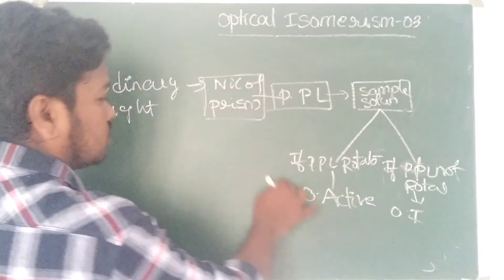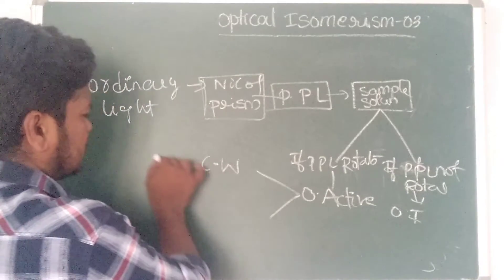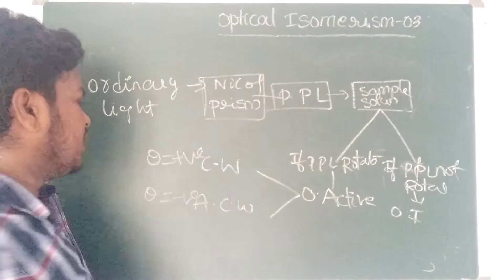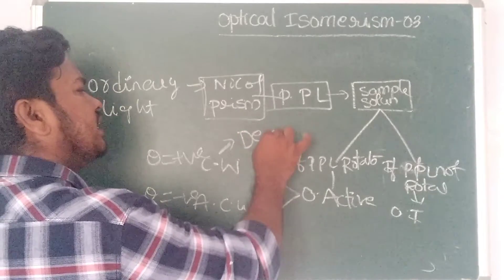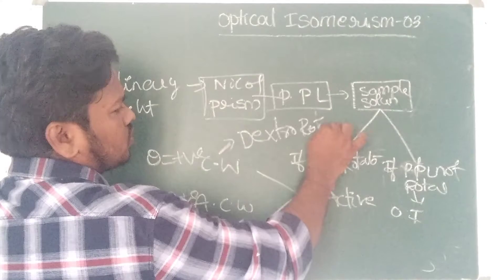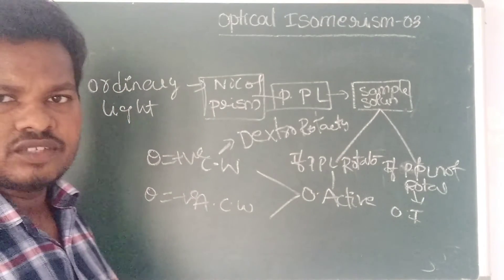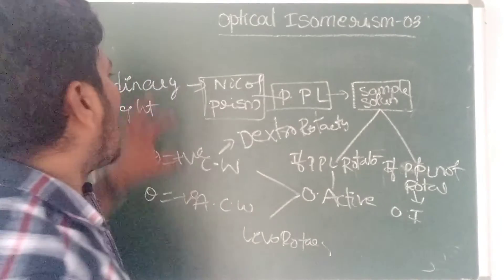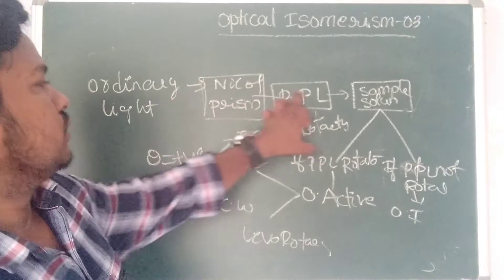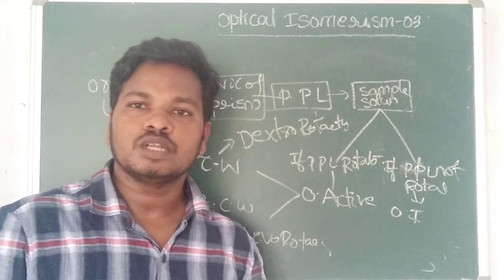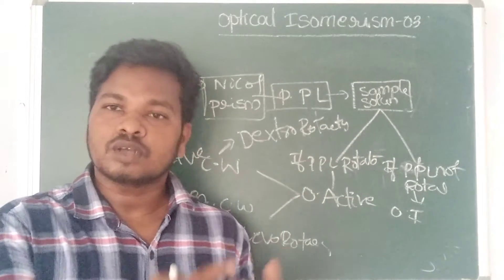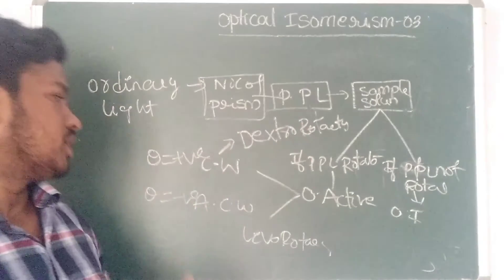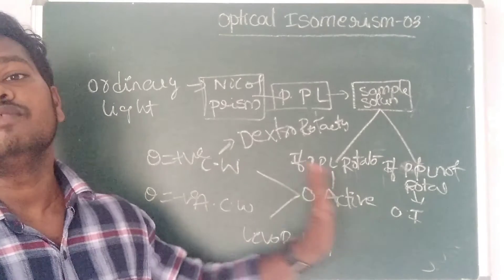In optically active compounds, there are two types of rotation. If the rotation is clockwise, theta is positive — that is called dextrorotatory. If the rotation is anticlockwise, theta is negative — that is called levorotatory. Setting up this experiment every time is very difficult and time-consuming.